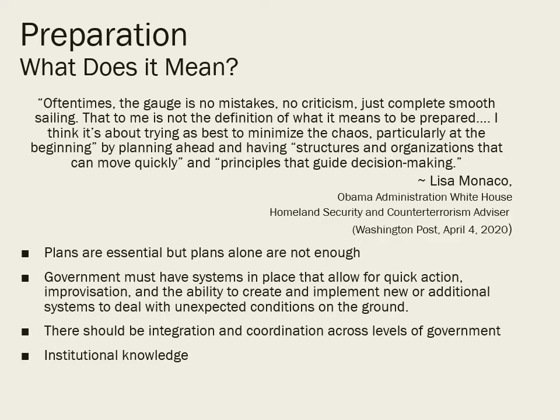Plans are essential, but organizations — particularly governments — need systems in place that allow for improvisation and quick action to deal with unexpected conditions. That requires integration and coordination across all levels of government and institutional knowledge. The degradation of our federal civil service over the past few years has been deeply troubling, because as long-time career civil servants leave, institutional knowledge goes with them and is not easily replaced. We have seen a real deterioration in the federal government's capacity to engage in large-scale improvised responses to emergencies.